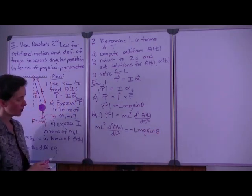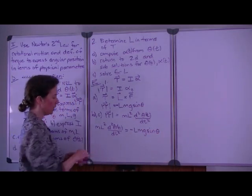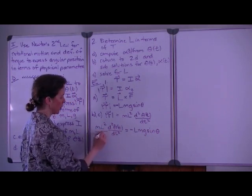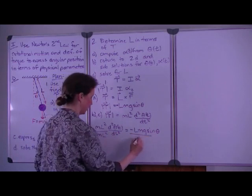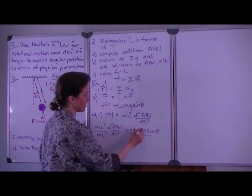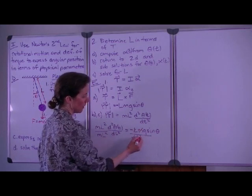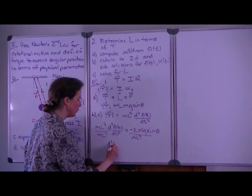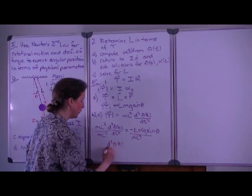And we see that a couple of these terms are going to cancel. Let's divide through by ml squared so that we have the differential term by itself. We see that mass cancels, and one term of the length cancels, and we then have our second order differential equation.